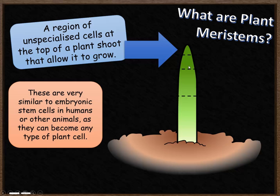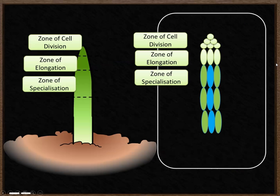The shoot is split into three zones. The first is the zone of cell division — this is the area in which unspecialized cells replicate. Underneath that is a zone where the cells elongate, so after being created through cell division the cells get longer. After they've elongated, they then start to specialize and become the different types of plant cells needed in those particular parts of the plant.